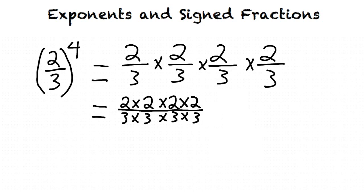Since 2 times 2 times 2 times 2 is on the top, also known as the numerator, our product will have 16 on the top. And since 3 times 3 times 3 times 3 is on the bottom, also known as the denominator, our product will have 81 on the bottom. This gives us a final answer of 16 over 81.